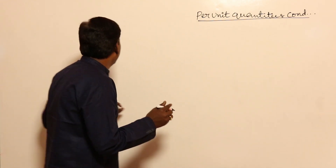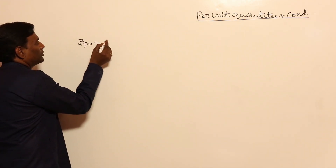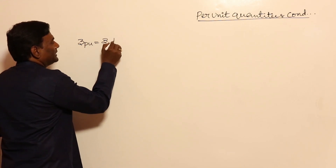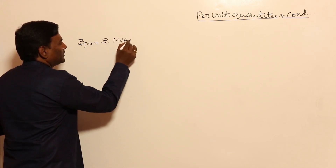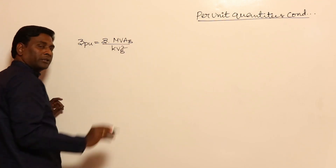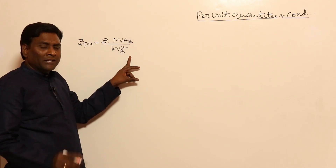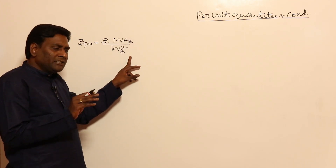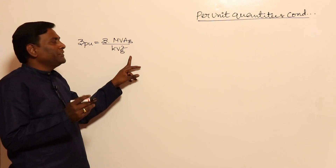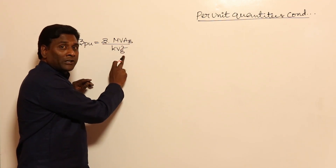In our last session, we derived a formula for Z per unit. What was that formula? Z per unit equals Z into MVA base divided by KV base squared. This formula can be used for either single phase or three phase. If it is three phase, this is three phase power and this is line voltage.